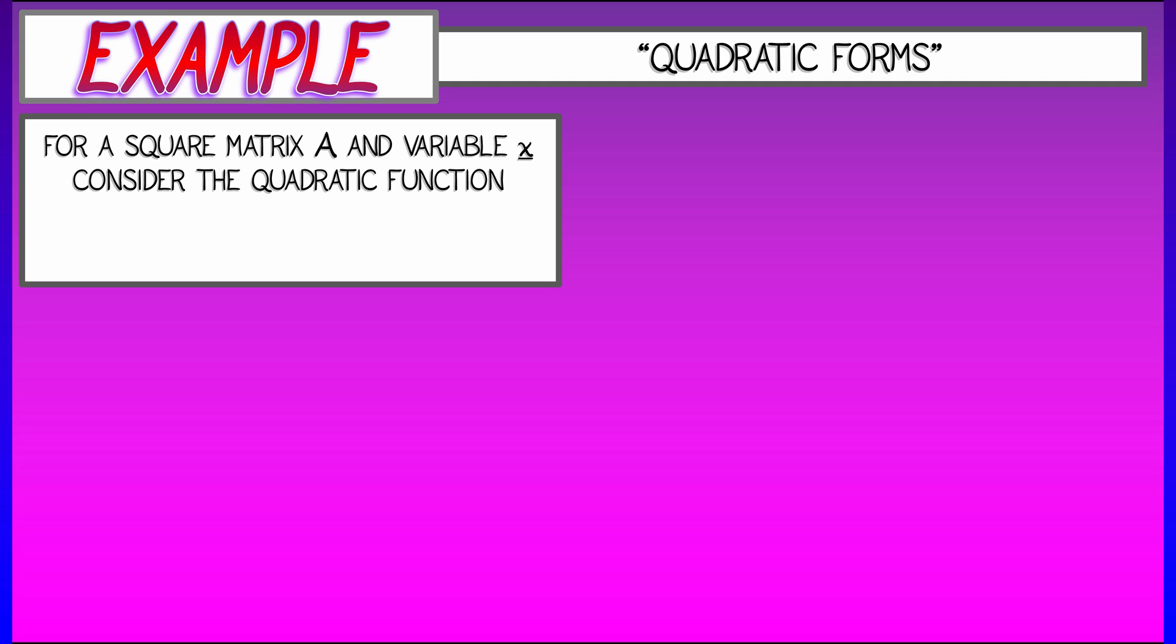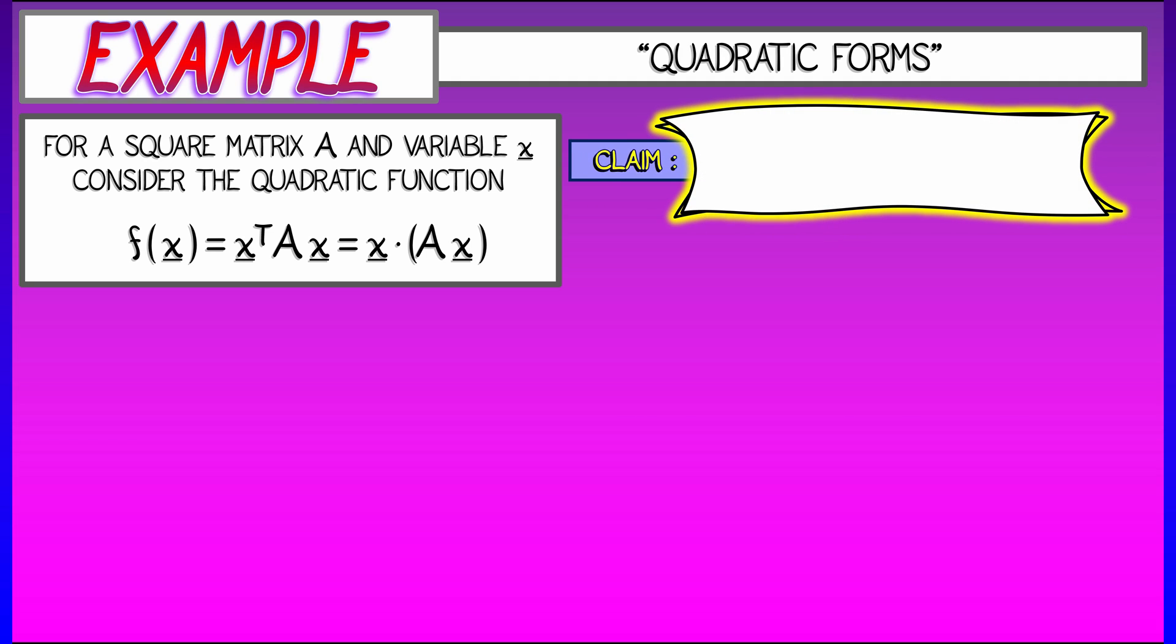Given a square matrix A and a variable x of the appropriate size, then the quadratic form associated to A is the function of x given by x transpose times A times x, which you could think of as the dot product of x with the vector A times x.